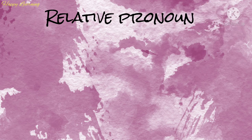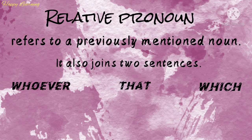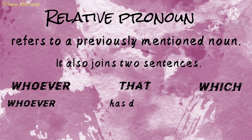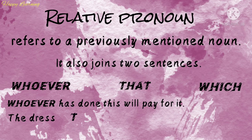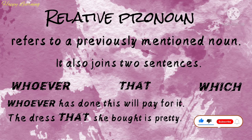Then come the relative pronouns. A relative pronoun refers to a previously mentioned noun and also joins two sentences. For example, words like whoever, that, and which are all relative pronouns. In a sentence like 'Whoever has done this will pay for it' and 'The dress that she bought is pretty,' the words whoever and that refer to someone or something mentioned earlier, and both pronouns join two sentences into a single sentence.